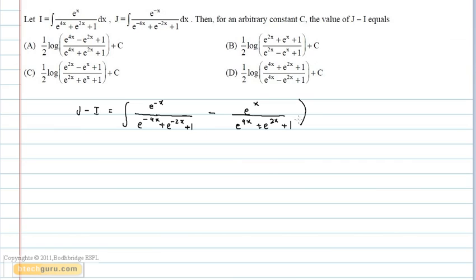into dx, which equals integral e power x into e power 2x minus 1, divided by e power 4x plus e power 2x plus 1, dx.